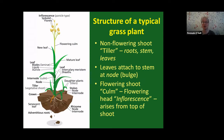The structure of a typical grass plant — most of them share the same characteristics. You have the non-flowering shoot, often referred to as the tiller, which consists of roots, stem, and leaves. The leaves attach to the stem at a bulge called the node. Then there's the flowering shoot, often called the culm, which includes the flowering head or inflorescence, arising from the top of the shoot.